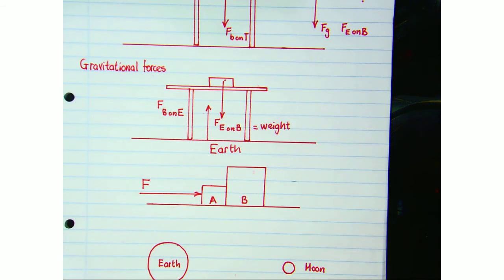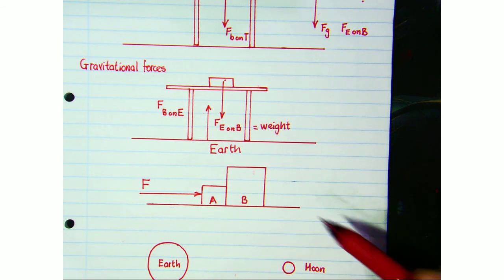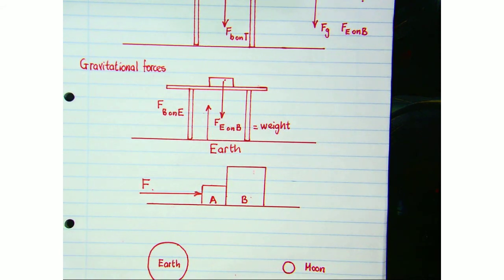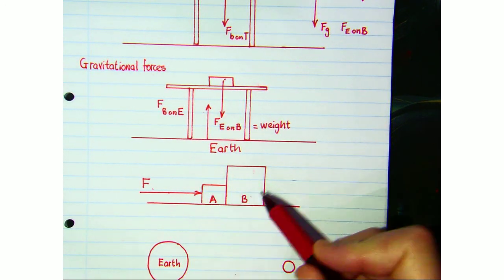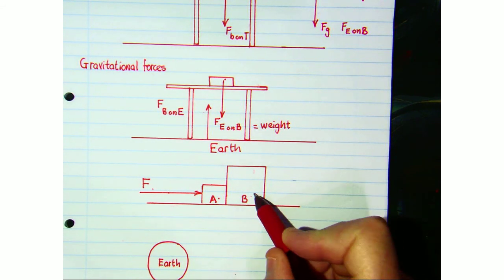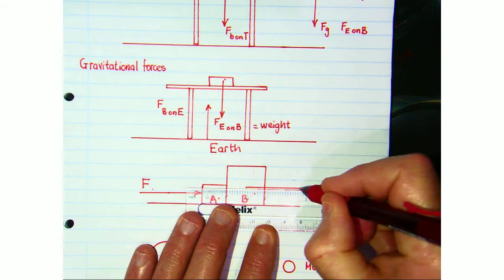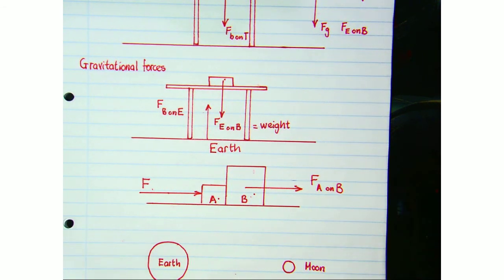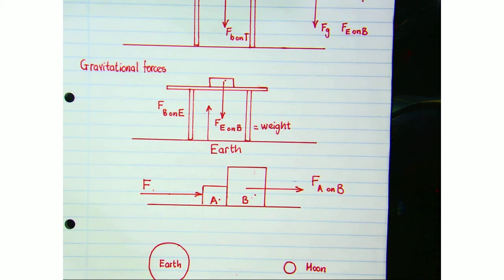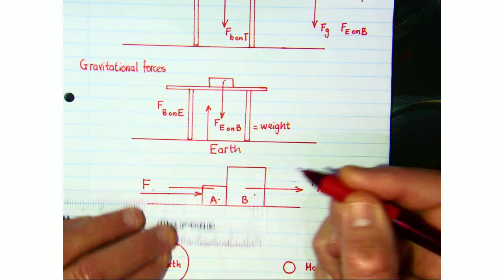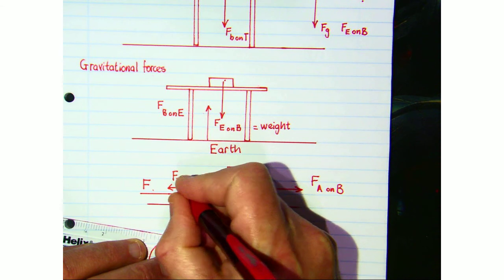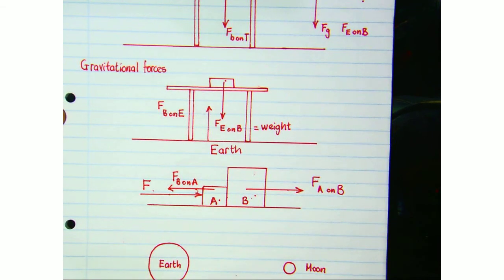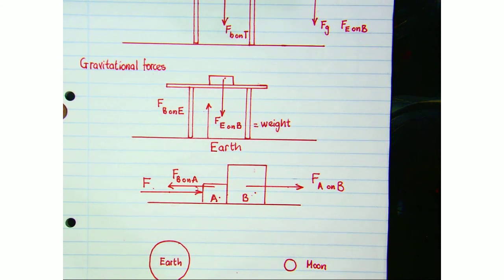Earlier in our notes we had an example where a forward force was applied to box A, which was resting against box B. Box A pushes on box B — that's the action force, the force of A on B. At the same time, according to Newton's Third Law, there should be a force that B exerts on A. These do not cancel each other out because they are acting on different objects. That's another example of an action-reaction pair.